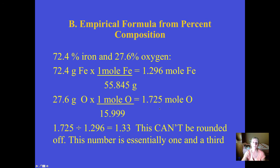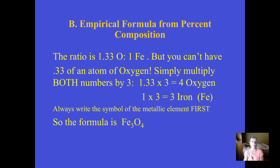Who's the smaller number? It's 1.296. Divide that by itself and you get 1. If I divide 1.725 by the smaller number, I get a funky number: 1.33, which is basically one and a third. You can't round that off to 1, and the ratio would be 1.33 oxygens for every one iron. You can't have a third of an atom of oxygen.